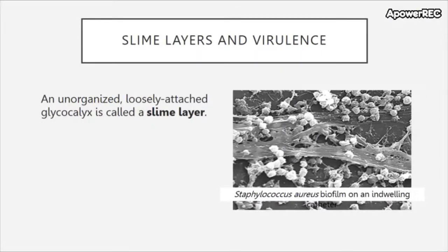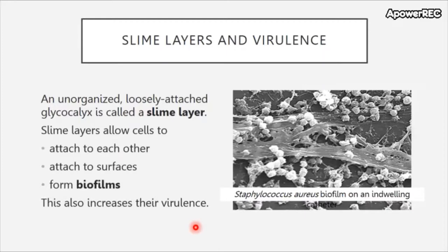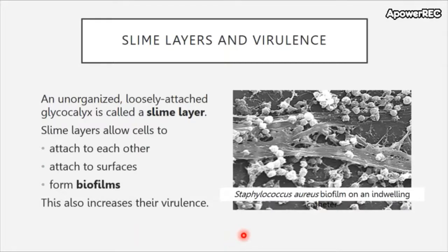An unorganized and loosely attached glycocalyx is called a slime layer. Slime layers allow cells to attach to each other, attach to surfaces, and form what we call biofilms. Approximately 99% of bacterial cells in nature exist in the form of biofilms. Slime layers can also increase the virulence of organisms — for example, biofilms can form within a catheter, preventing organisms from being flushed away and allowing them to attach and grow to inner surfaces. This can also occur in other parts of the human body.